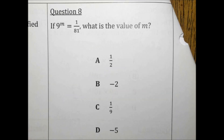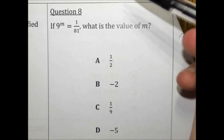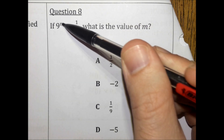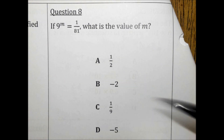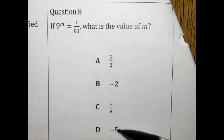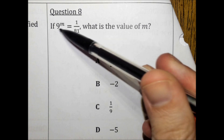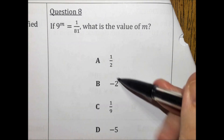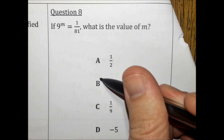If 9 to the m equals 1 over 81, what is the value of m? Our answer is a fraction, so our exponent must be negative — so we already know it's between choice B and D. We need to figure out: 9 to what power is 81? 9 to the second is 81, so the answer is 9 to the negative 2nd. The answer is B.